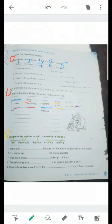Exercise number four. Complete the sentences with the words in the box. Fresh, disposable, disgrace, evidence, dressing.